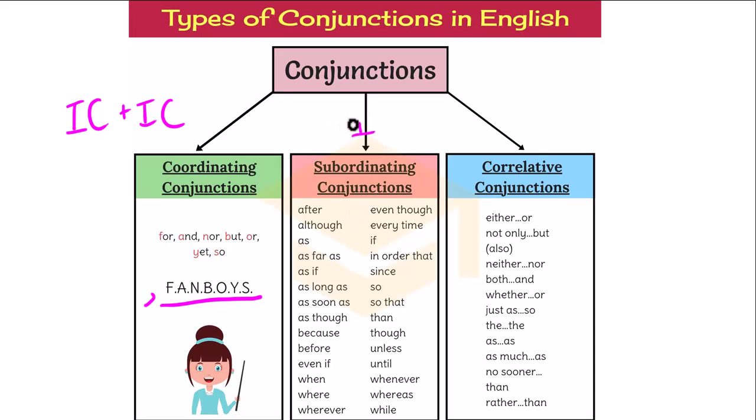My subordinating conjunction and an independent clause makes that a dependent clause. So John runs, if John runs, since John runs, before John runs, when John runs, after John runs—any of those no longer complete a thought, no longer an independent clause. They become dependent clauses.